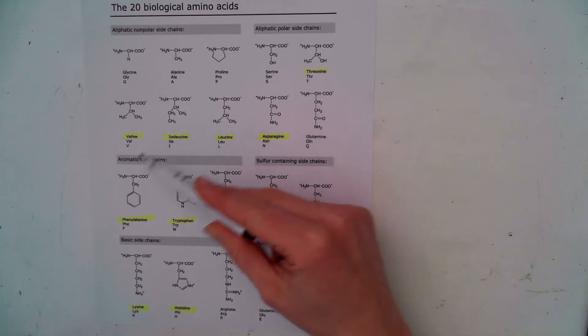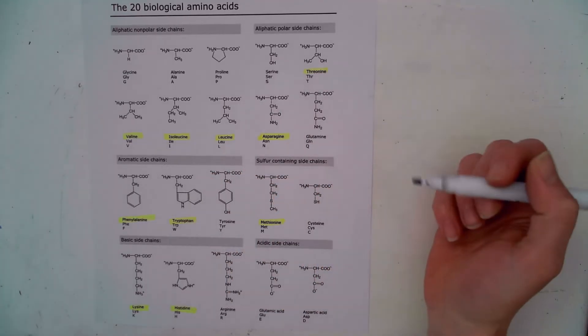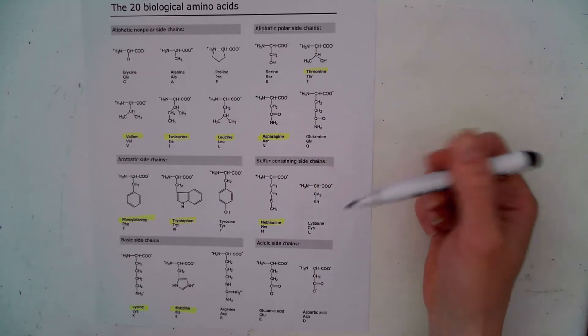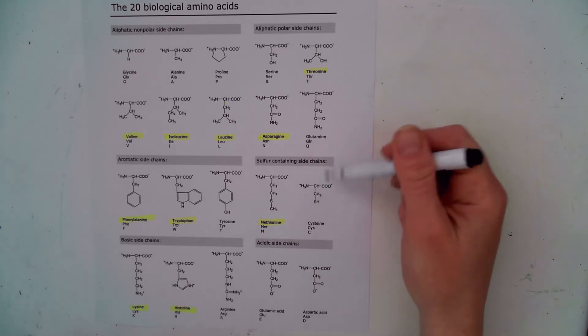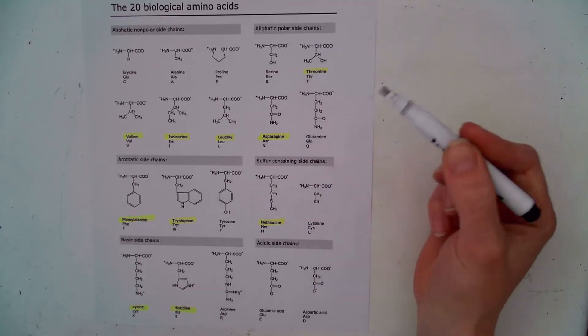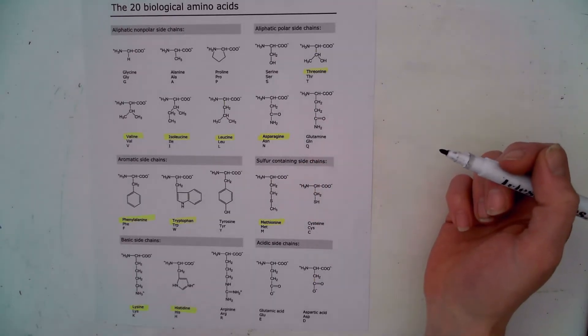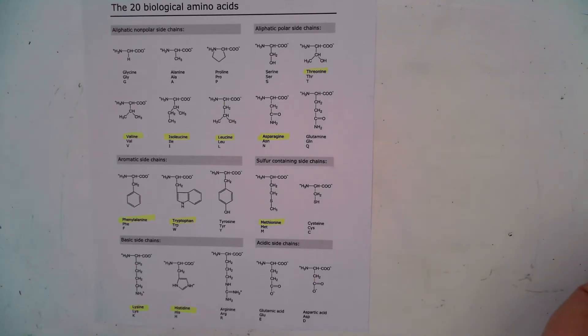Well these ones that are highlighted in yellow can only come from the food that we eat. They're essential. These other ones your body is capable of assembling from other material within your body. So we call those non-essential amino acids.